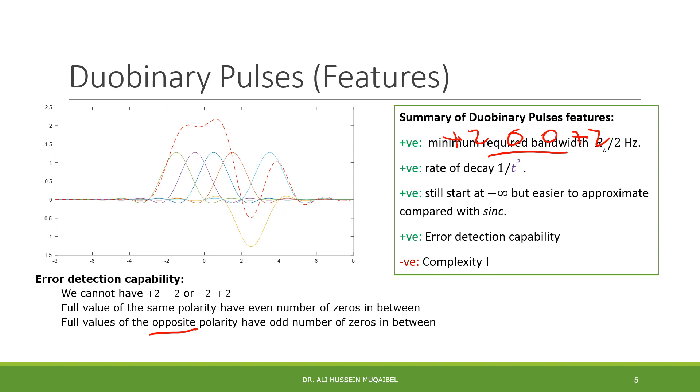Some advantages for duobinary. We have the minimum required bandwidth, Rb over 2. We have the data rate, the decay is even faster than sinc. It's 1 over t squared. It's true that it starts at minus infinity, but it's easier to approximate compared with the sinc. It has some error detection capability. But, of course, it introduces some complexity because we are controlling the ISI to recover the data, to find out what the data is. We'll see in the next slide how we decode, and there is some complexity there.